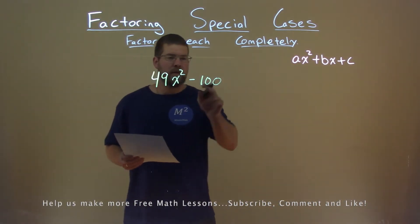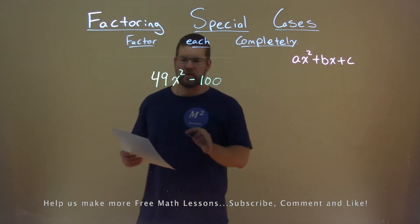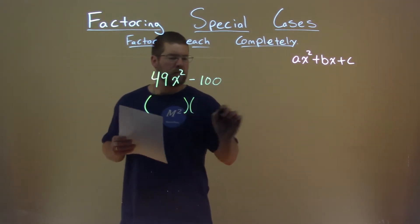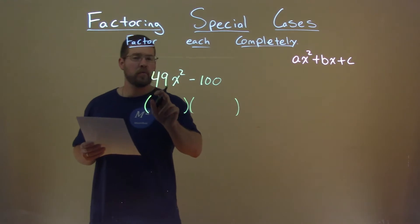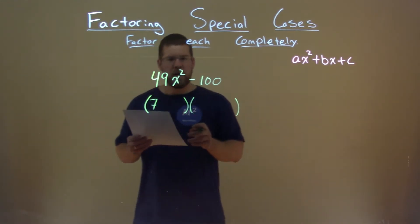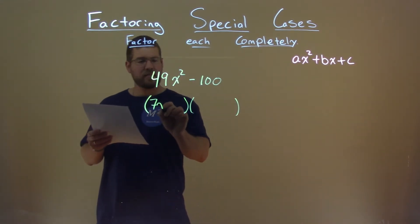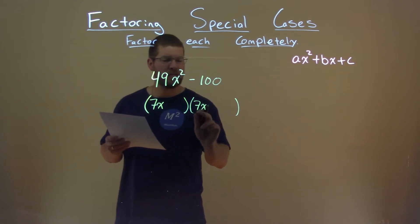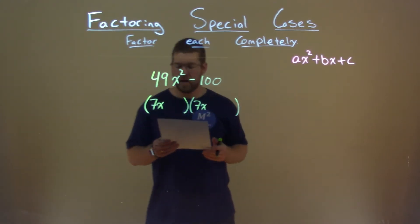Notice my 49x squared and 100 are both perfect squares. So when I write this out here, square root of 49 is 7 and square root of x squared is x. So if you have 7x and 7x here that gets multiplied to be 49x squared.